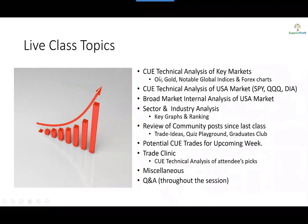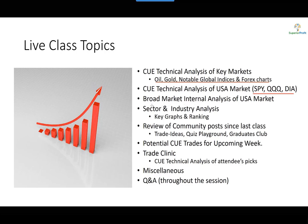As usual, we will use Q technical analysis to review oil, gold, Indian Nifty futures, and a few forex pairs. We will also look at SPY, QQQ, and DIA for the US market. Then we will study broad market internal analysis, sector and industry analysis through key graphs and ranking tables. This week we would like to use our visual fundamental analysis tool called Q Vital to look at stocks in certain industries identified from top-down analysis, including distillers and vintners.